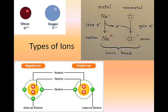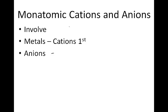Types of ions. Monatomic cations and anions involve only single elements. The metals are the cations and have positive charges. The anions are the non-metals and have negative charges. This is when we have a single element in the ion.